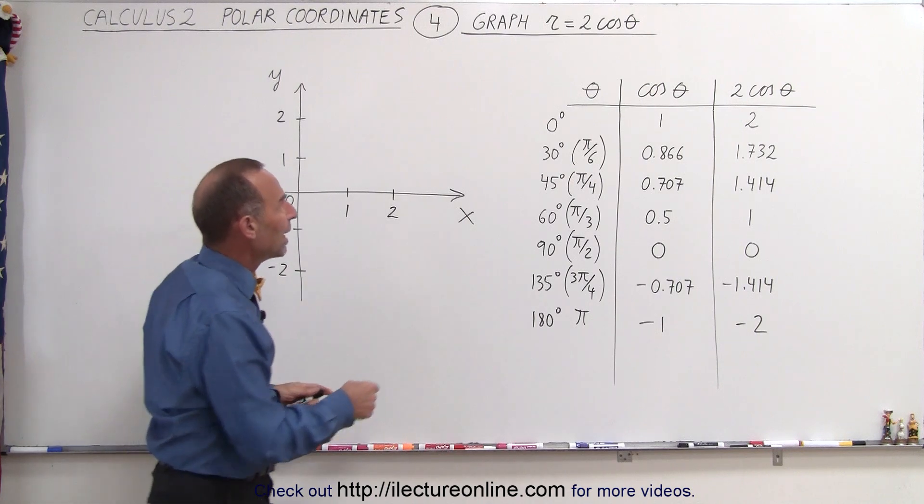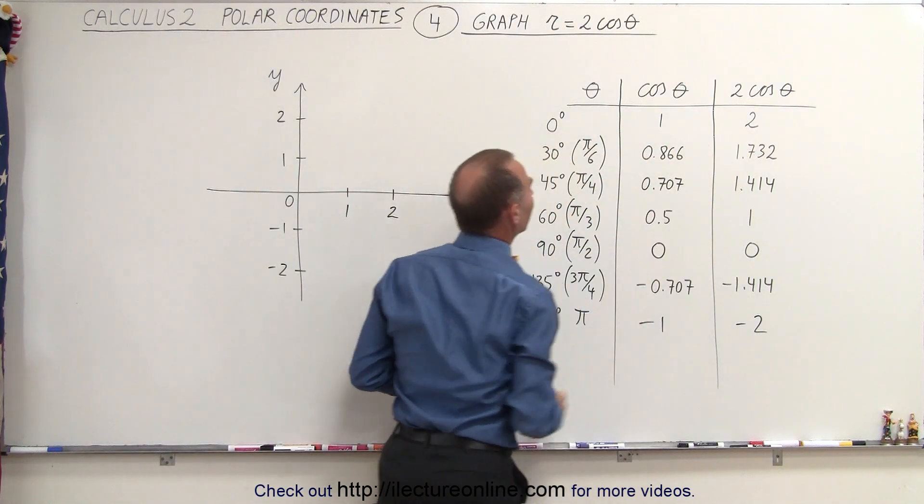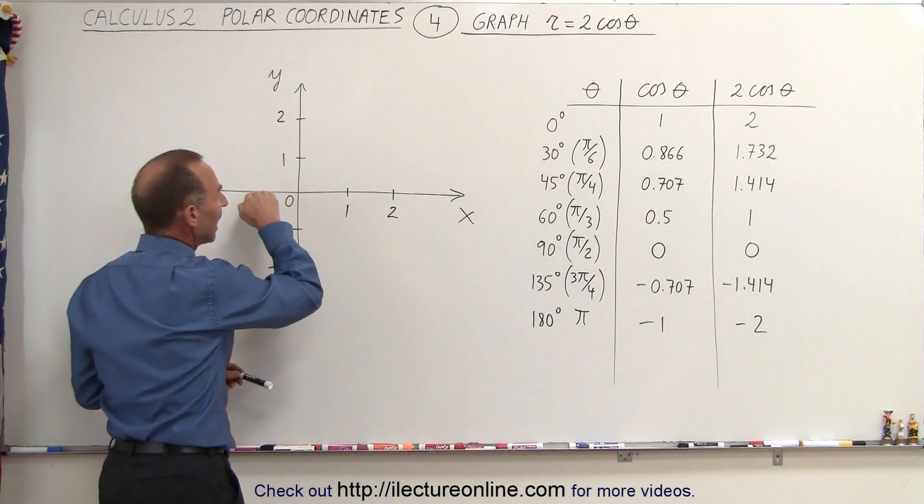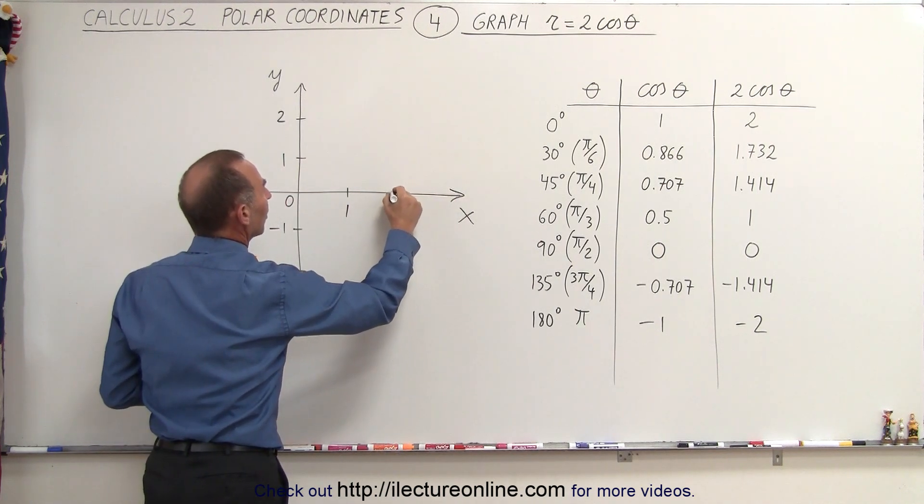Starting out with an angle of theta equals 0 degrees, the cosine of that is 1, and multiply times 2, we get 2. So at an angle of 0 degrees, which is along the x-axis, we take our first point right there.